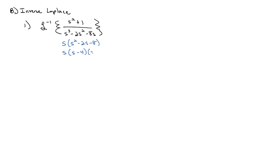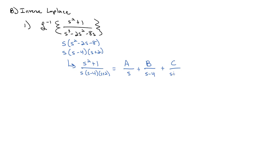The denominator has an s in every term, so we factor out an s, leaving s squared minus 2s minus 8, which factors to (s minus 4)(s plus 2). Our setup is (s squared plus 1) over s(s minus 4)(s plus 2) equals A over s plus B over (s minus 4) plus C over (s plus 2). Multiplying by the least common denominator gives us s squared plus 1 equals A(s minus 4)(s plus 2) plus B·s·(s plus 2) plus C·s·(s minus 4).